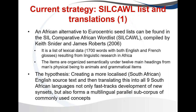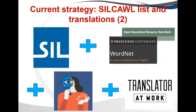We then decided to Africanize our Eurocentric seed lists using the SIL Comparative African Word List compiled by Keith Schneider and James Roberts, published in 2006. This list has 1,700 words with English and French glosses resulting from linguistic research in Africa, making it more context-sensitive. The items are organized semantically under 12 main headings from 'man's physical being' to 'animals' and 'grammatical items', making disambiguation easier. Our hypothesis was that creating a more localized South African English source text and translating into all nine languages would fast-track development. As a happy coincidence, this also forms a multilingual parallel sub-corpus of commonly used concepts available across all nine South African WordNets.